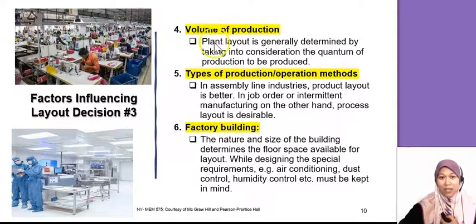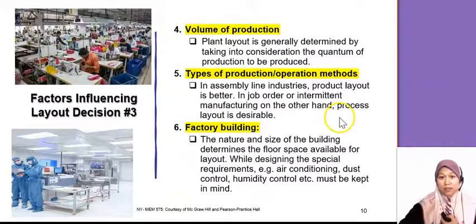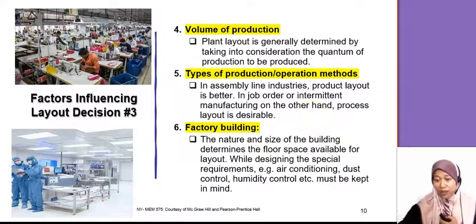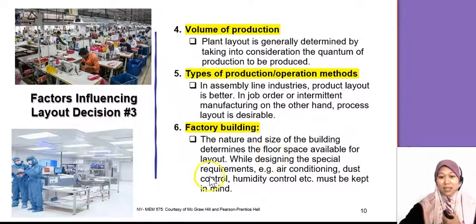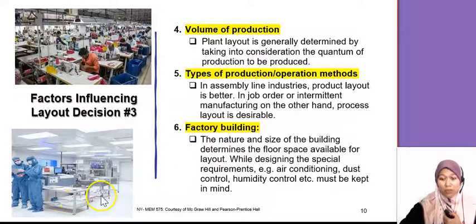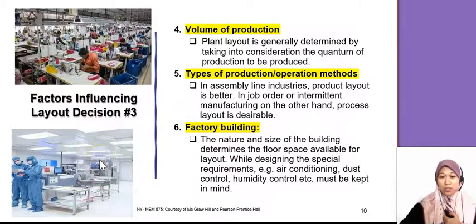You also need to consider the volume of production — if it is high volume, make sure you have space for extra machines. Consider the type of production method you use: U-shape or straight line. Also consider the factory building: how big is it, is humidity controlled, is lighting sufficient? Especially in a clean room environment — dealing with chips, wafers, or PCBs — you need a low-temperature environment and must control humidity because the products are very sensitive.